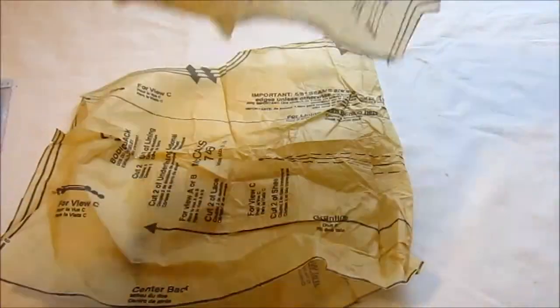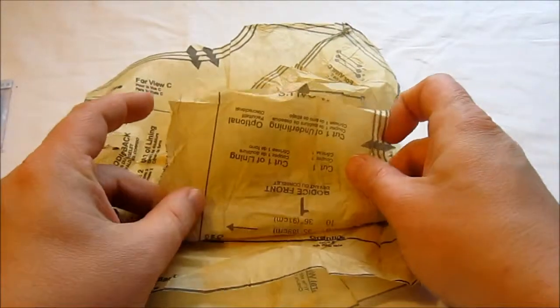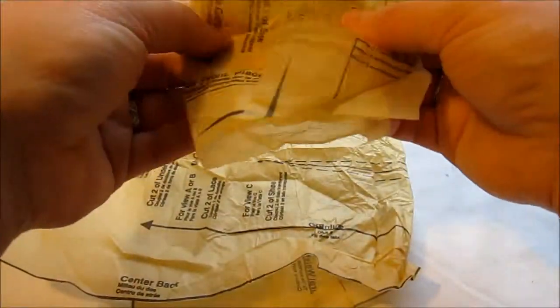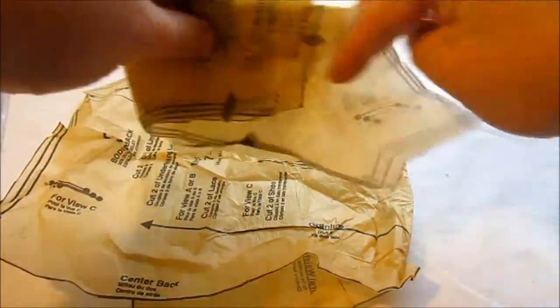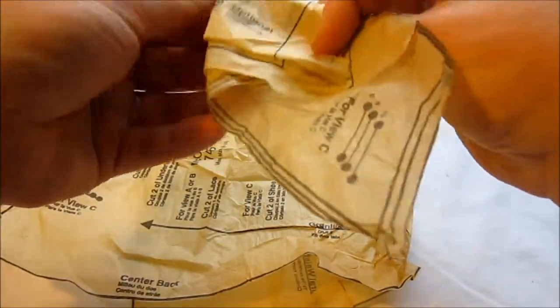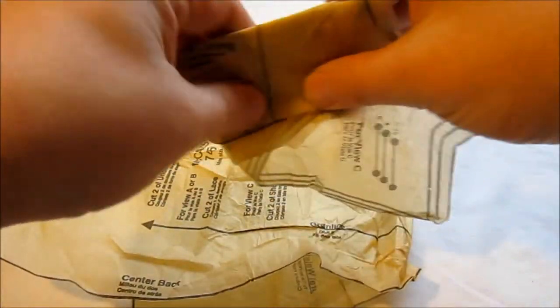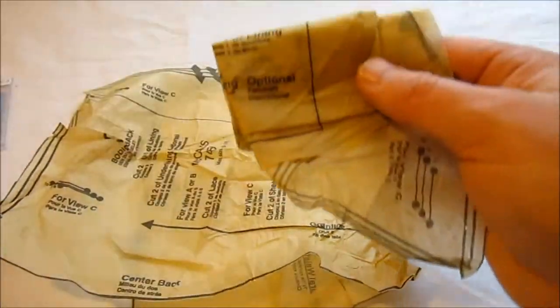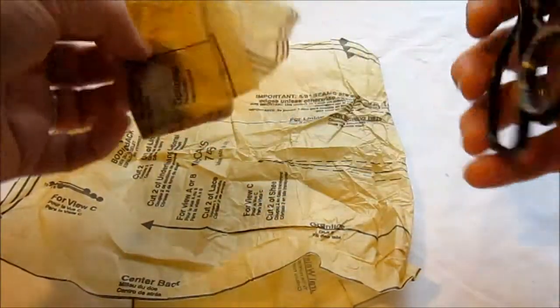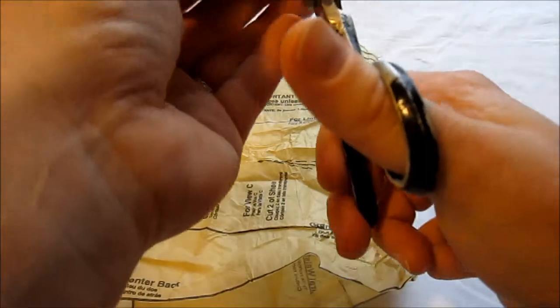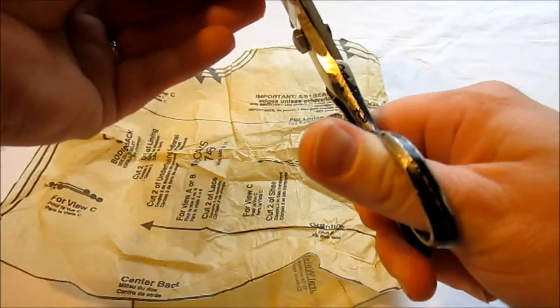To get started, cut circles into your tissue paper. I fold the tissue paper into several layers because you can cut through several layers at a time, and then just cut a circle.